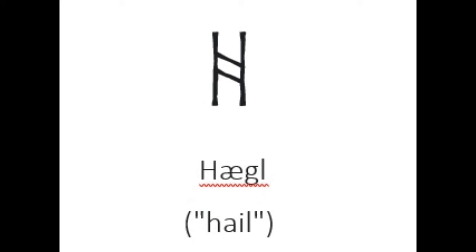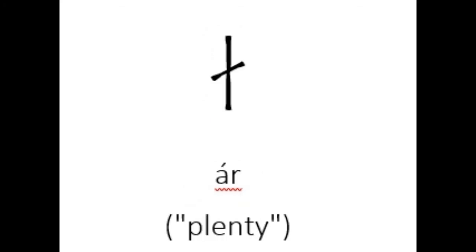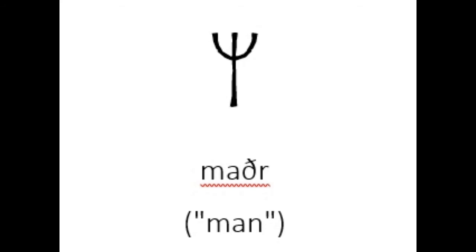Originally the runes had meaning to them. The word 'rune' meant secrets — that's what they were. They all had secret meanings in them. They were not letters, they were not an alphabet used to compile sentences until much later on in time. Originally they were just used as symbols that contained secrets.